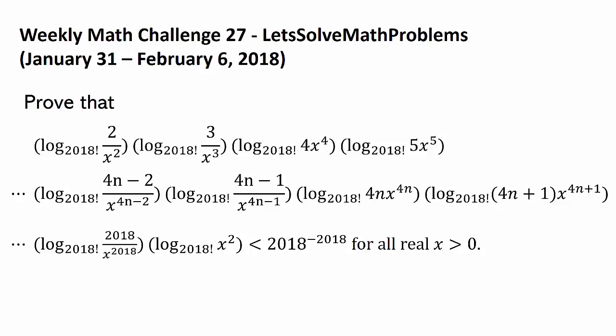The question is: prove that log base (2018!) of (2 / x²) times log base (2018!) of (3 / x³) times log base (2018!) of (4 / x⁴) times log base (2018!) of (5 / x⁵), continuing this pattern until log base (2018!) of (2018 / x^2018), with an additional factor of log base (2018!) of x², is less than 2018^(−2018) for all real x greater than 0.